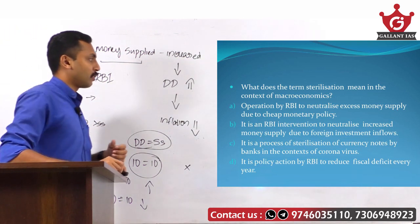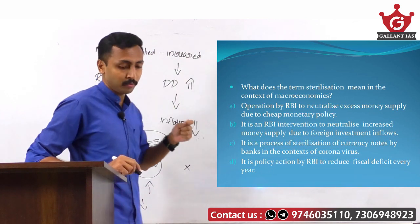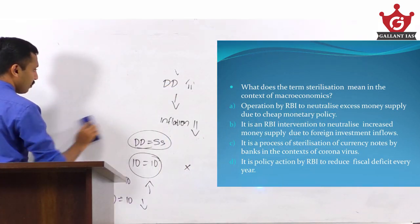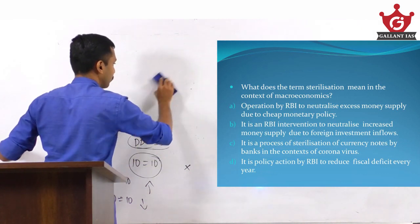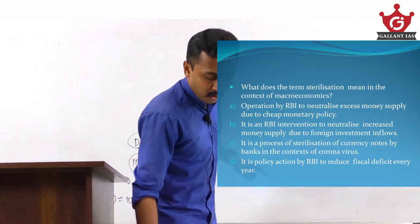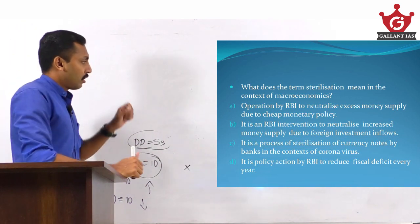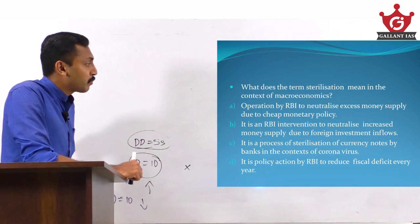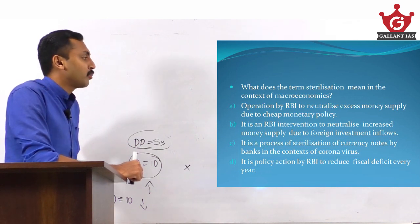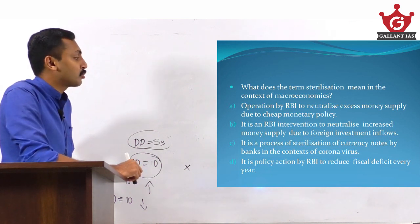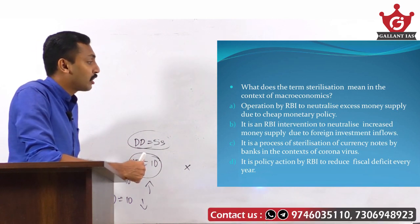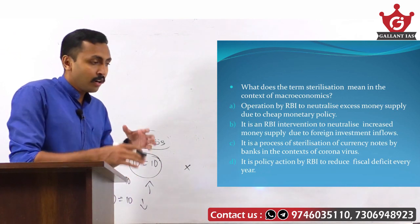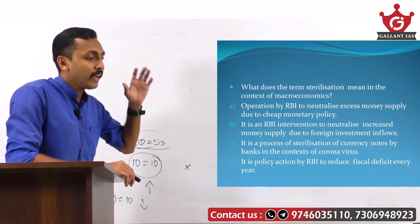The next question is regarding sterilization. What does the term sterilization mean in the context of macroeconomics? Four options are given — it is a direct question, so less probability for guessing using elimination. Option A: operation by RBI to neutralize excess money supply due to cheap monetary policy. Option B: RBI intervention to neutralize increased money supply due to foreign investment inflows. Option C: process of sterilization of currency by banks in the context of coronavirus. Option D: policy action by RBI to reduce fiscal deficit every year. Sterilization is a method adopted by the central bank to control inflation caused by external shocks.